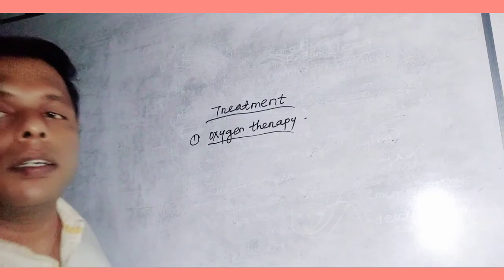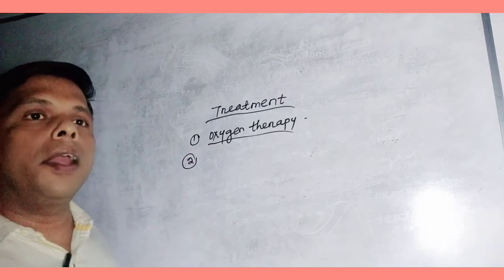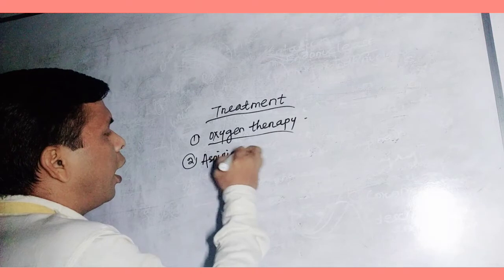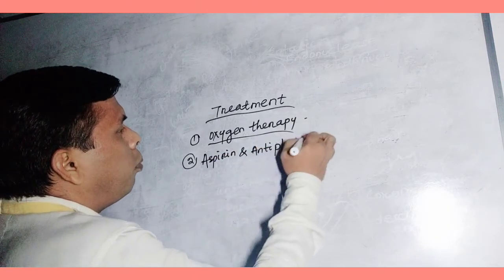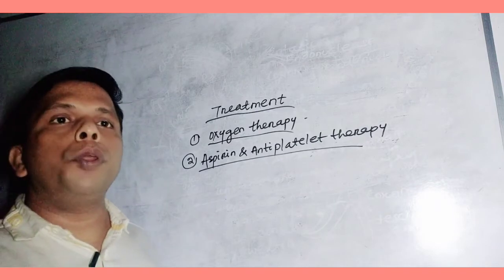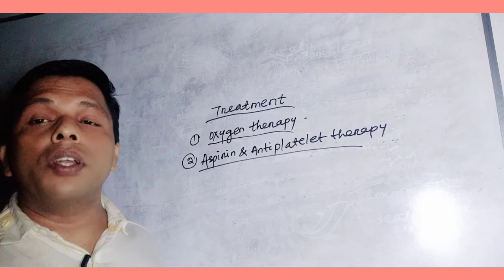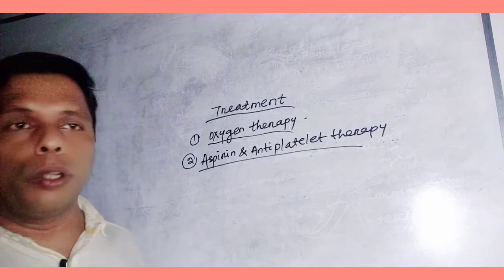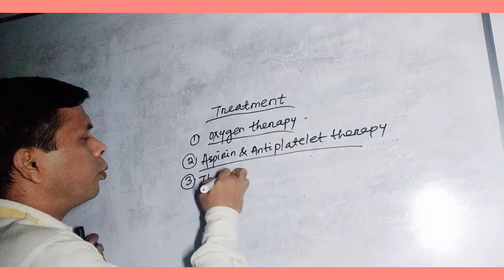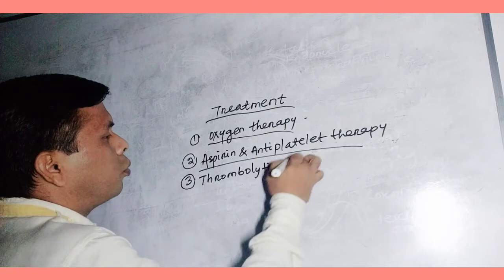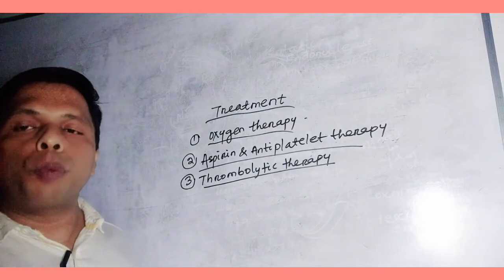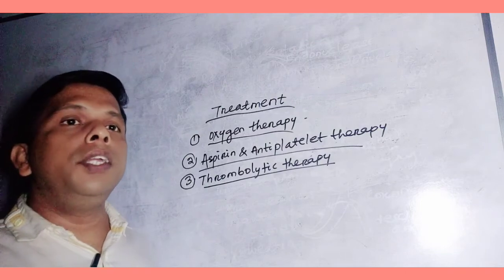The second treatment is intake of aspirin and anti-platelet therapy. In this therapy we can prevent the clot formation. These are blood thinners, they thin the blood and prevent clotting. The third is thrombolytic therapy, like TPA and streptokinase, which are used for dissolving the existing clots.